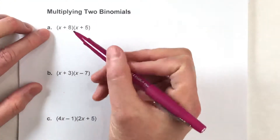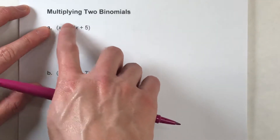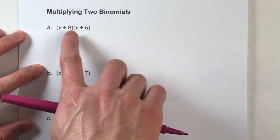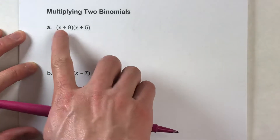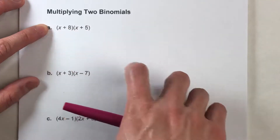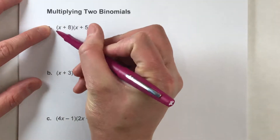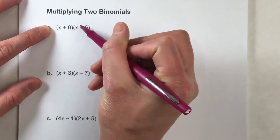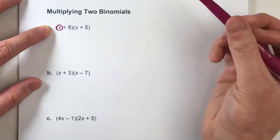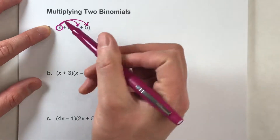So when you multiply binomials like this, you'll notice there are parentheses around it, which tells you that this entire expression here is being multiplied by the entire expression right there. And it works out to be a lot like the distributive property. In fact, that's how I teach my students to do it. I know a lot of teachers use the acronym FOIL to make sure you multiply all the combinations, but I like to think of it as the distributive property.